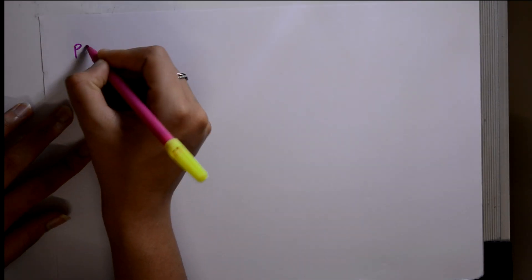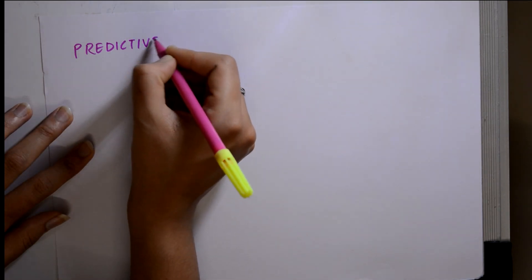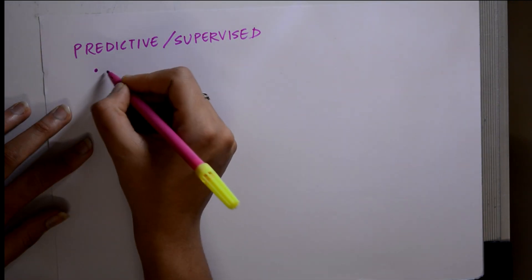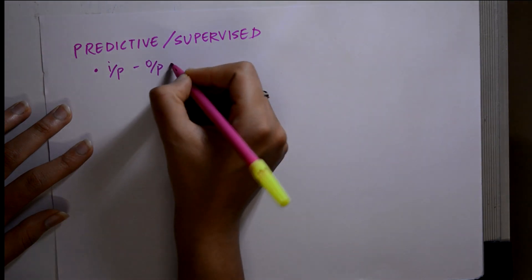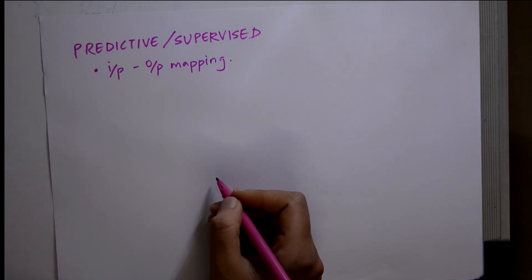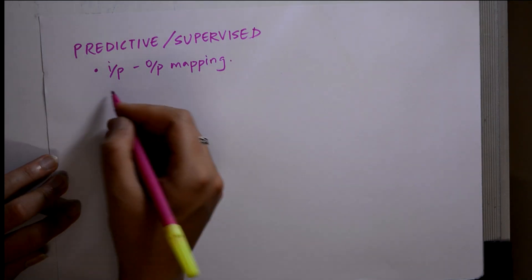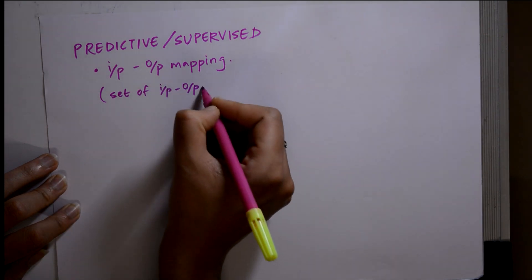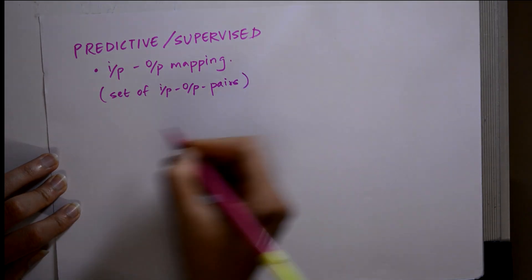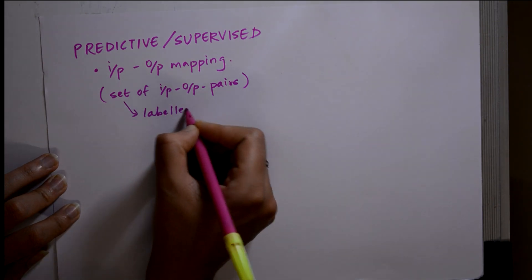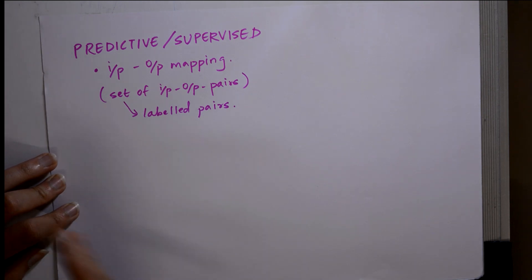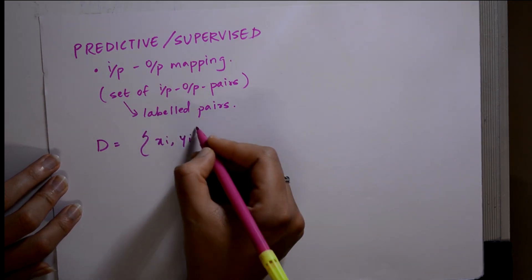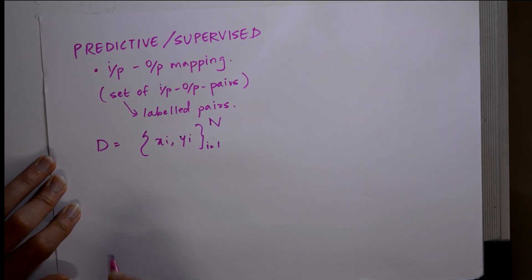In predictive or supervised learning, we saw that it is input-output mapping. The thing that happens is a set of input-output labeled pairs is given to you. Supervised learning can be written as (xi, yi) where i goes from 1 to n. We can explain this with an example.